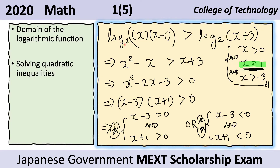Here we combined the two expressions to the left of the inequality. From the laws of logarithms, we can perform multiplication inside the logarithm when the given is a sum of logarithms. We are given log base two of x and log base two of x minus one, and so we can simplify it into a single logarithm expression.